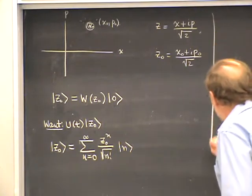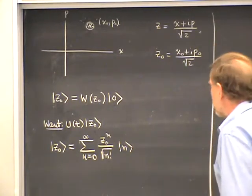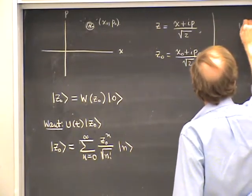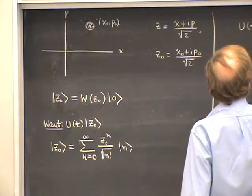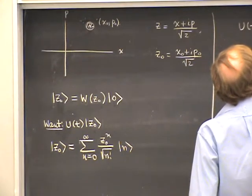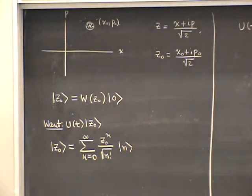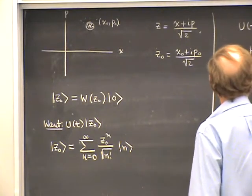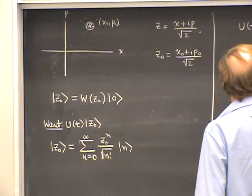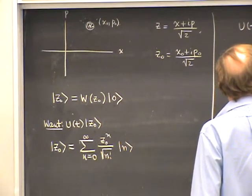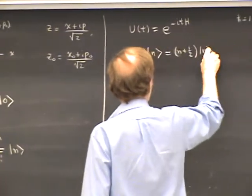That's most of the work towards finding the time evolution. The reason is that U(t) is the same thing as e to the minus iT times the Hamiltonian — here we're setting ℏ equal to 1, so all units are dimensionless. The Hamiltonian acts on its own energy eigenstate and brings out its eigenvalue, which is n plus 1/2 in these dimensionless units.